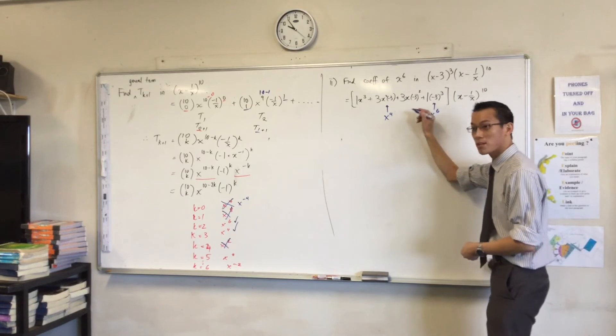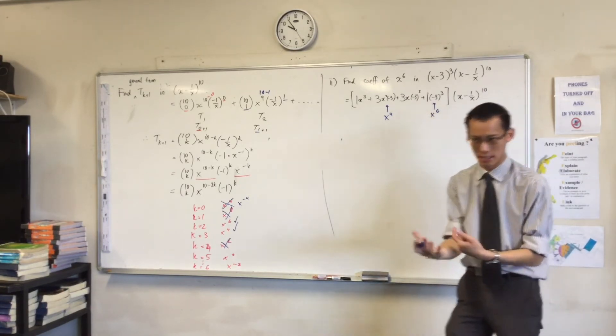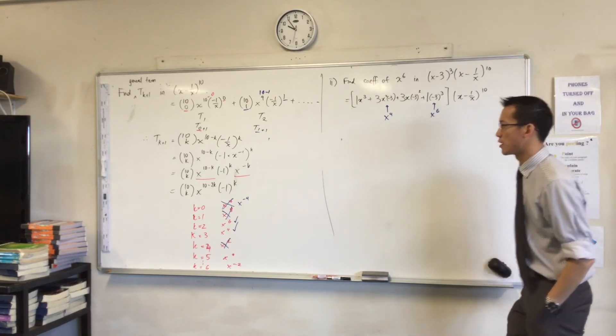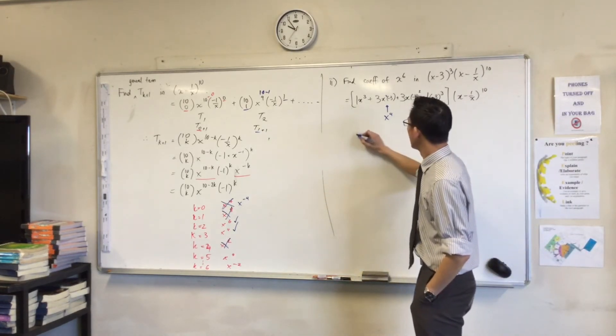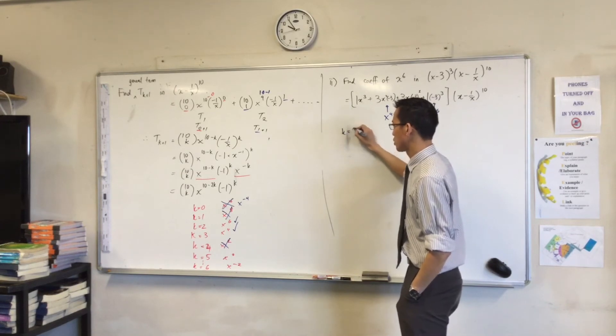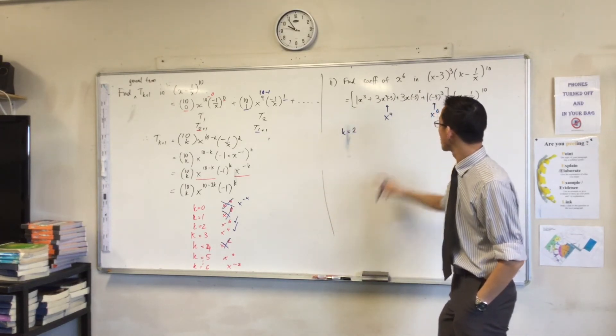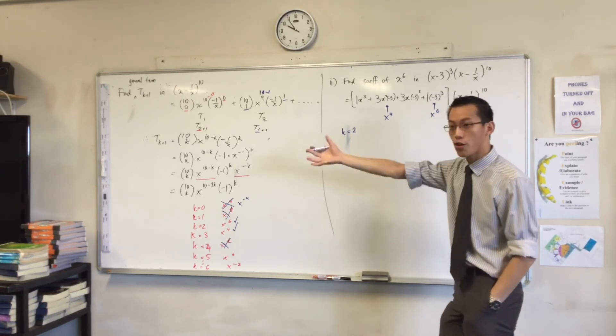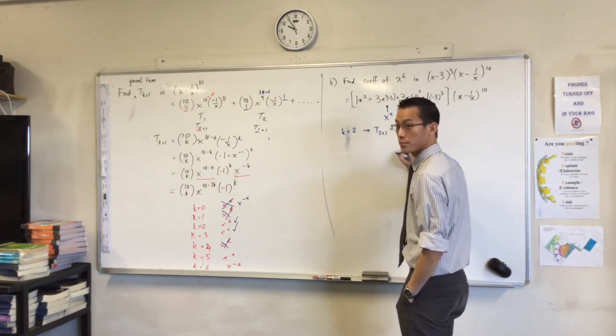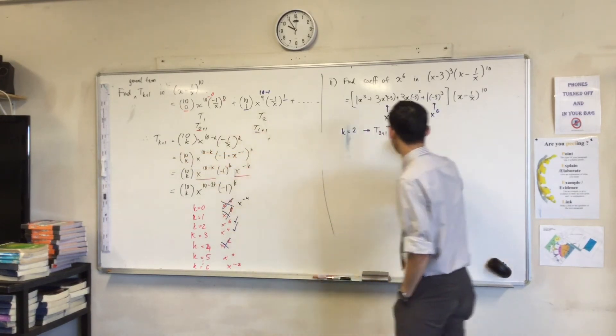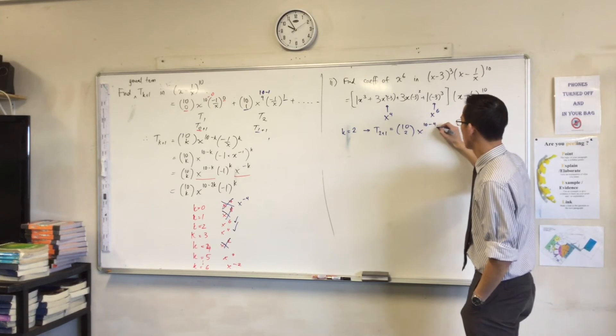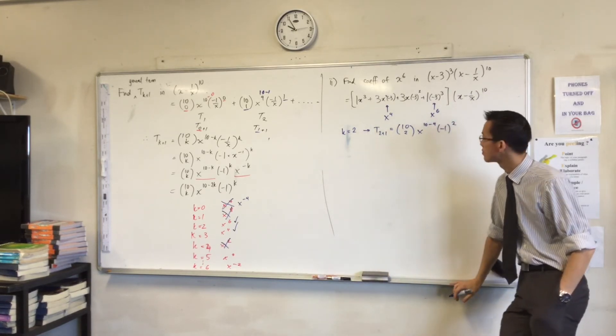That was a lot of thinking without much writing. So this is what makes it an extension question. Now we are actually ready to do the working. I know which terms in here I need. So therefore I'm going to say, you've got them over there. The coefficient, I'll do it one at a time. I'll do it one at a time. For k equals 2. k equals 2. That'll give me x to the 6. It'll give me this term. So I'm going to go back. It says using part 1. So I'm going to say that's t of 2 plus 1. That's my k value. So now I'm just going to substitute into that bottom line. 10 minus 4. How's that look? Yeah. Is that okay?